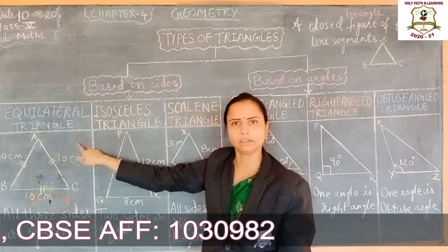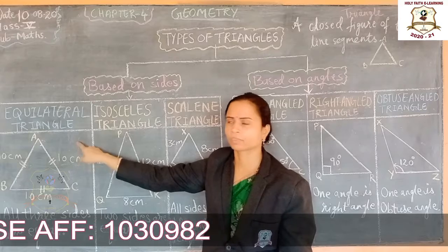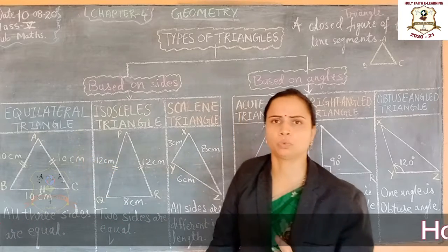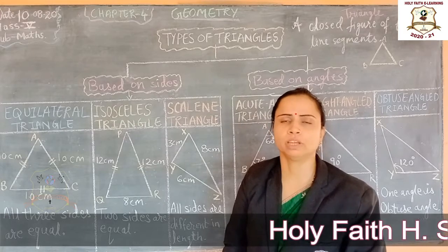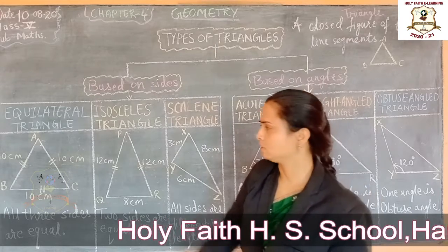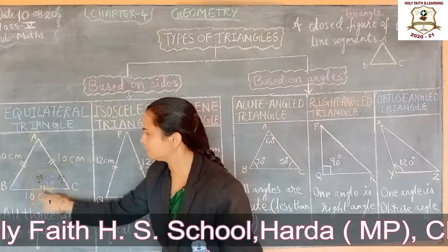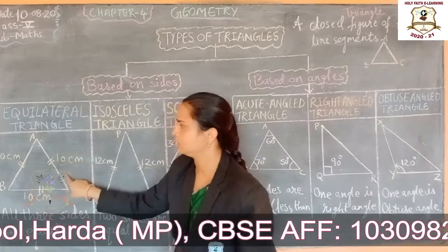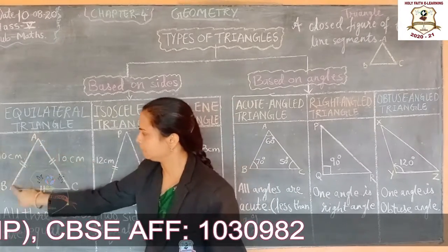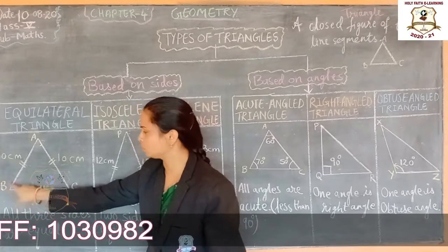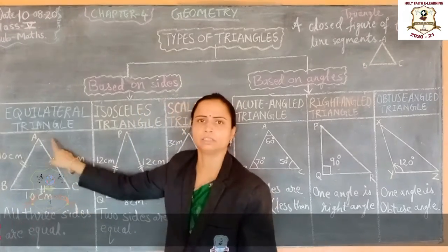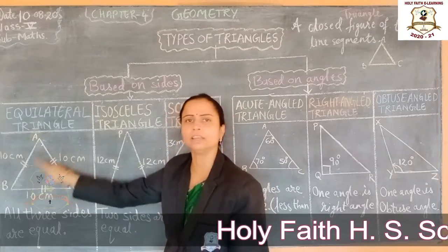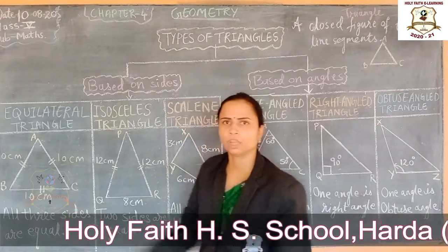First is equilateral triangle. A triangle whose all sides are equal is called an equilateral triangle. See here, all three sides are equal. Side A is equal to side B is equal to side C, which is equal to 10 cm. All three sides are equal.